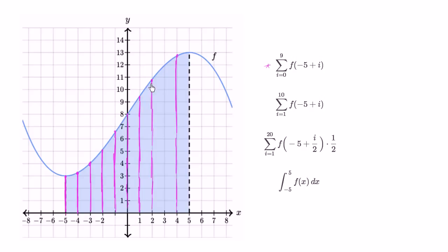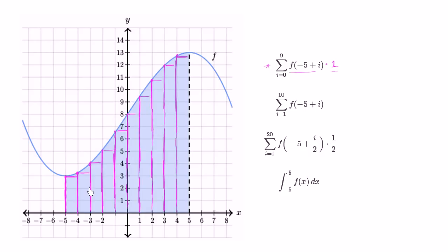One thing that might jump out at you is you could construct rectangles that all have width one. If you multiply the height times the width, the area is going to be the same thing as the height. So if we put a one times one right over here, this makes it very clear that you're taking the height times the width of each rectangle. You essentially have a bunch of left-handed rectangles trying to estimate this blue shaded area, and it's clearly going to be an underestimate. This is going to be an underestimate of the area of this blue area.